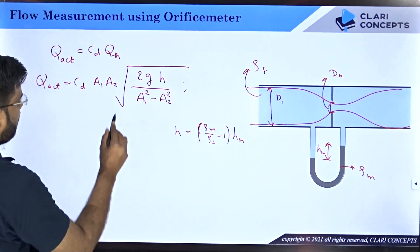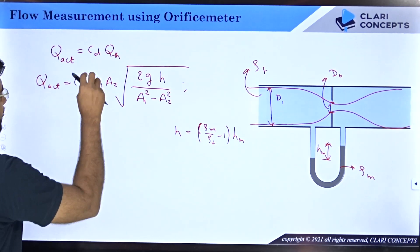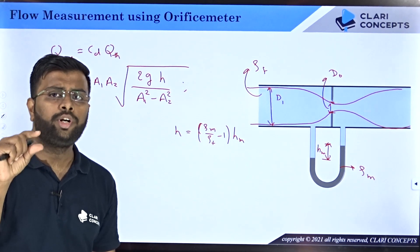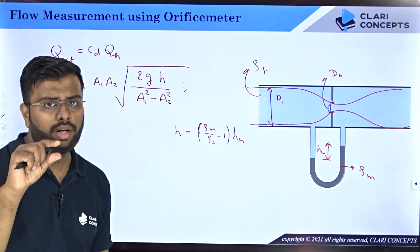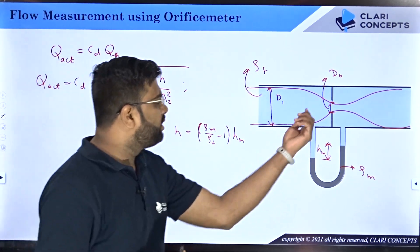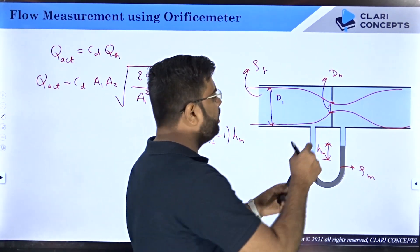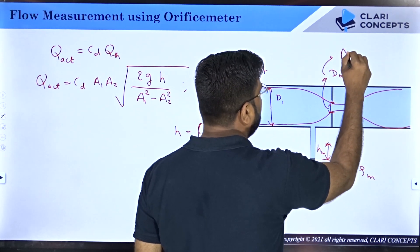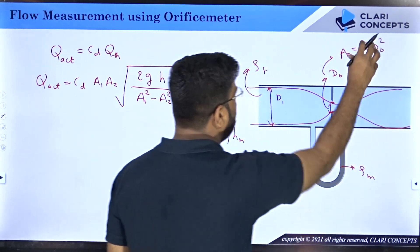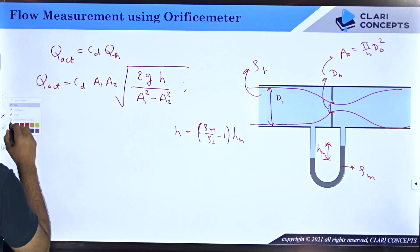A_1 was the main diameter or main area of the pipe. What was A_2? A_2 was the area corresponding to the throat section of the venturimeter. But here there is no throat. In case of venturimeter, throat section was a minimal area. Here the minimal area is d_o, and corresponding to d_o you will have area called orifice area which is π/4 d_o square. So instead of A_2, in case of orifice what you will have is A_o, where A_o is the cross-sectional area of orifice.